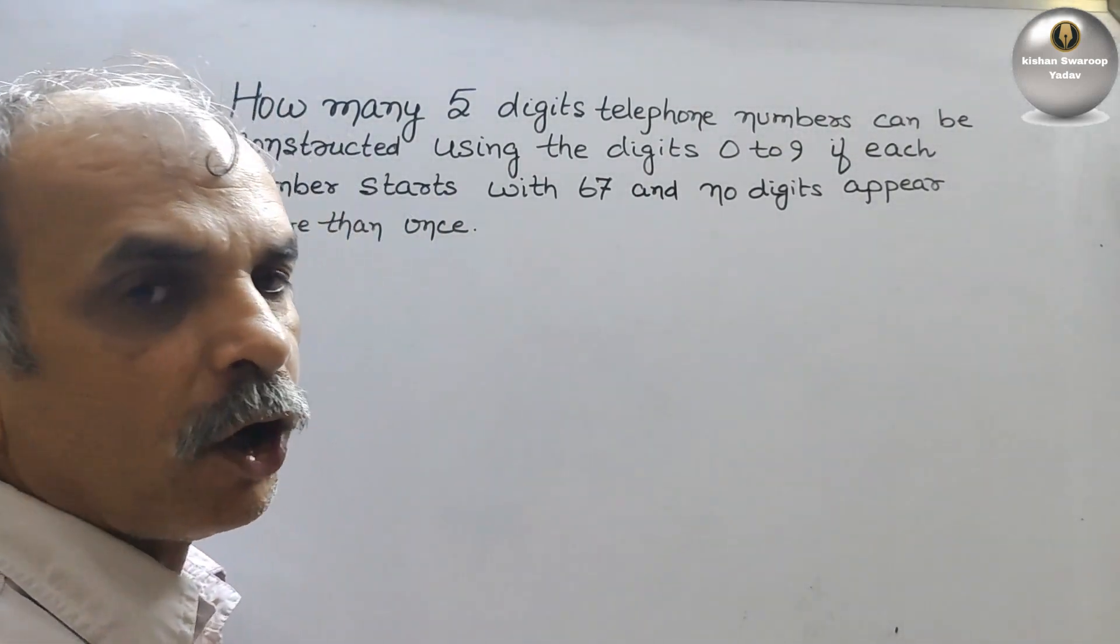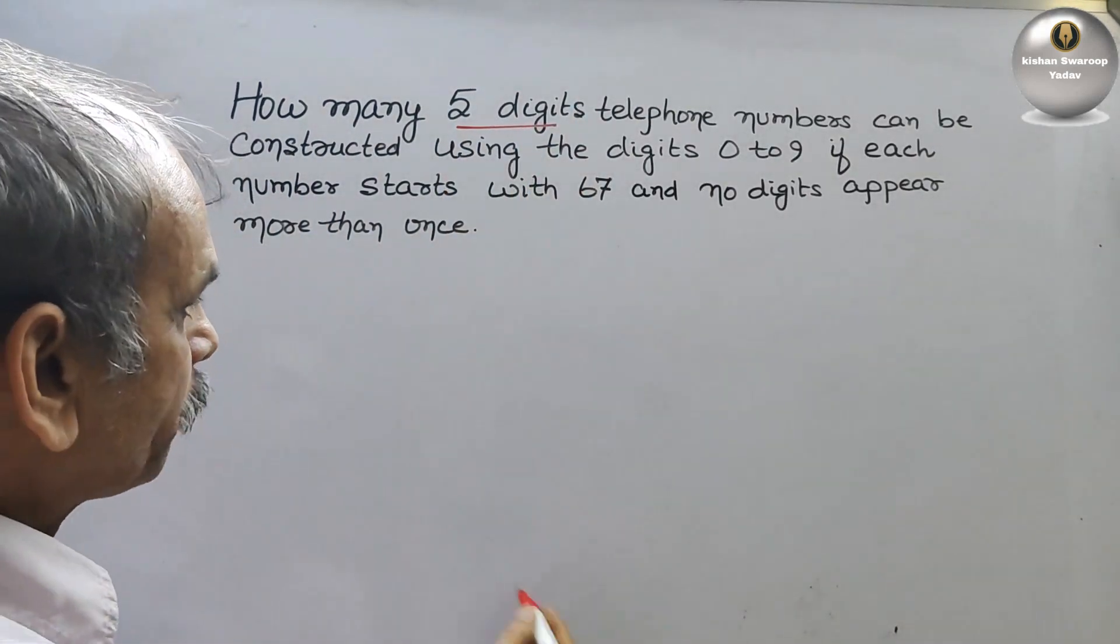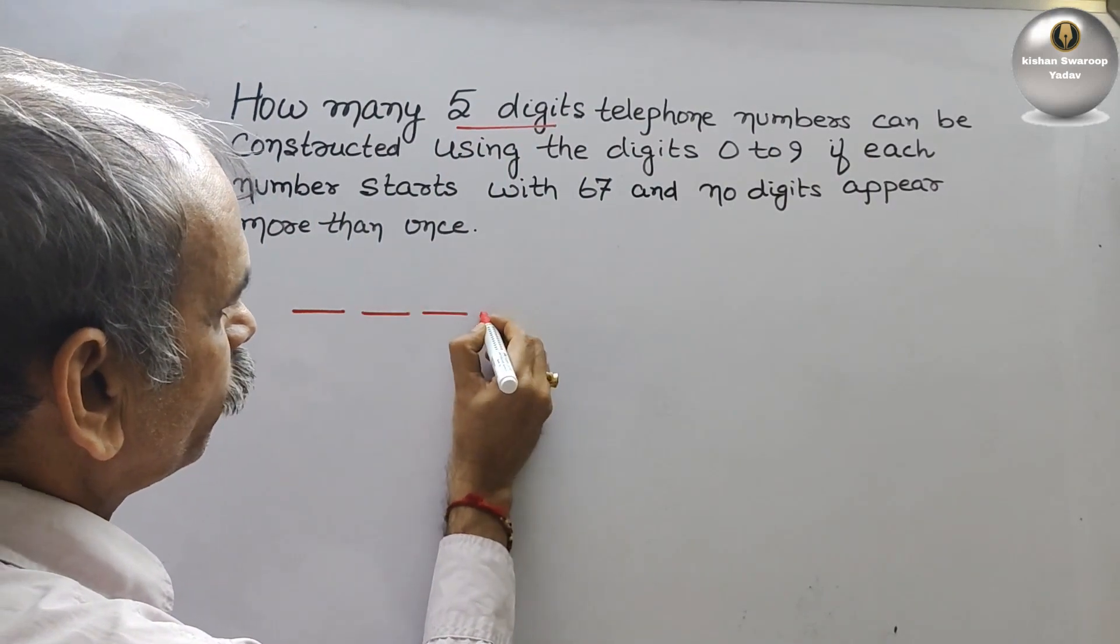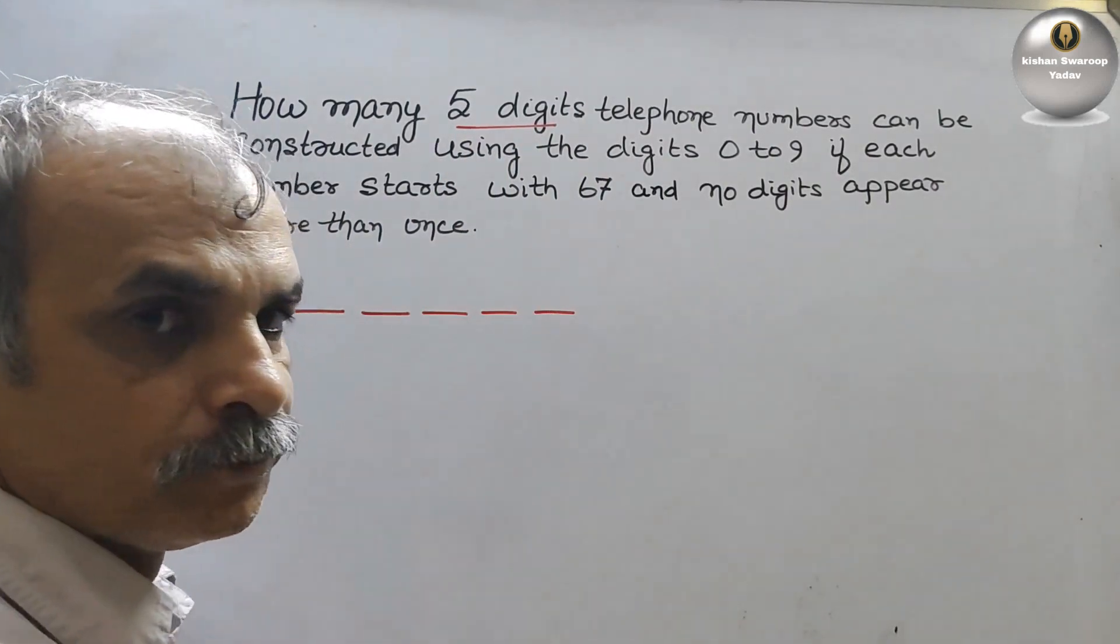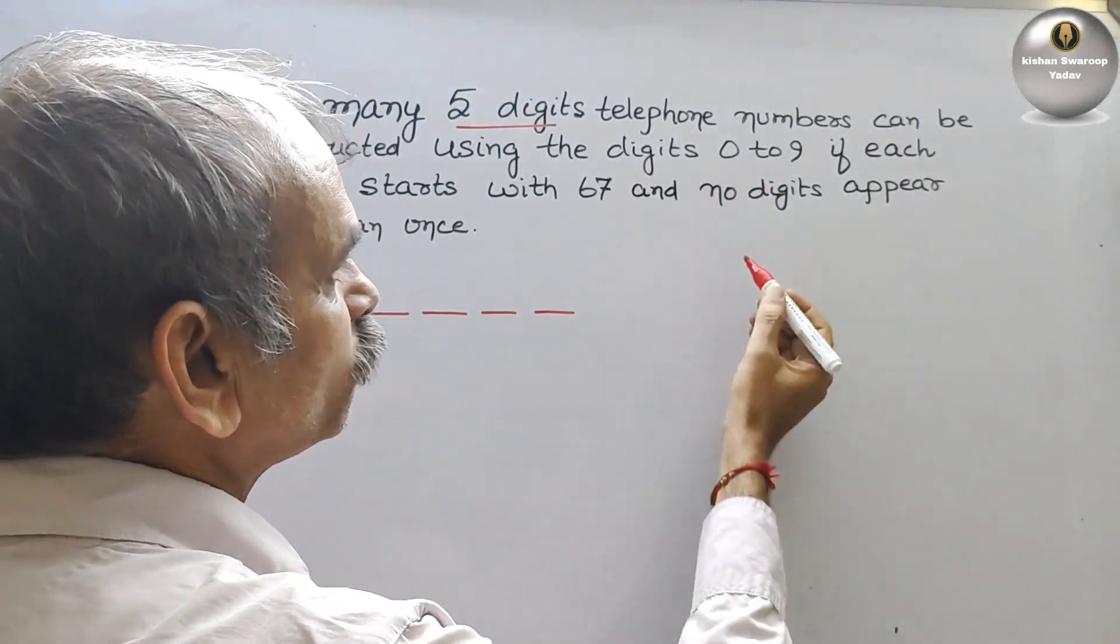So, what they have told? They have told 5-digit numbers. So suppose these are your 5-digit numbers: 1, 2, 3, 4, and 5. And they have given the numbers, what are that? 0 to 9.